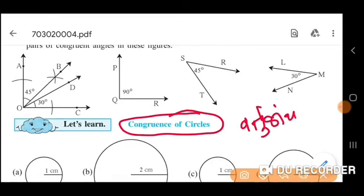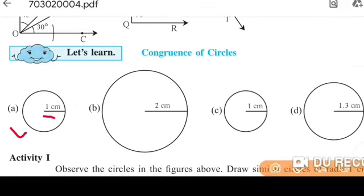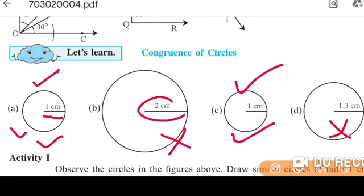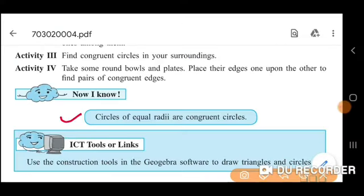This is a circle and this is its radius. In figure A, the radius is 1 cm. In figure C, the radius is also 1 cm. It means that figure A and figure C are similar — both circles are congruent with each other. But B and D are not congruent because figure B shows radius 2 cm and figure D shows radius 1.3 cm. Circles of equal radius are congruent circles.